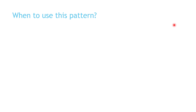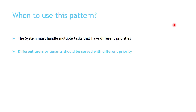Now let's see when you should use this pattern: when your system has multiple tasks with different priorities, or when you have different users or tenants that should be served with different priority levels.